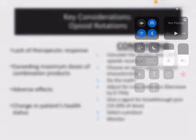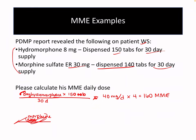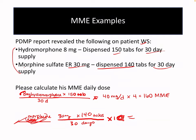Now let's calculate the morphine sulfate portion, keeping it all in one step including the conversion factor. Morphine sulfate 30 milligrams times 140 tablets divided by 30 days, with a conversion factor of 1 for morphine. Plugging that into the calculator gives us 140 morphine milliequivalents for the morphine sulfate.